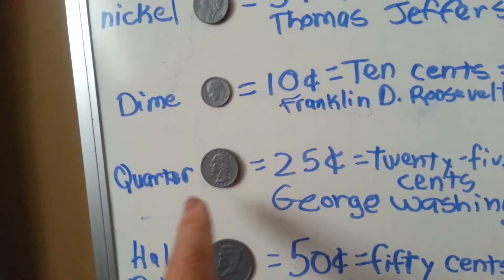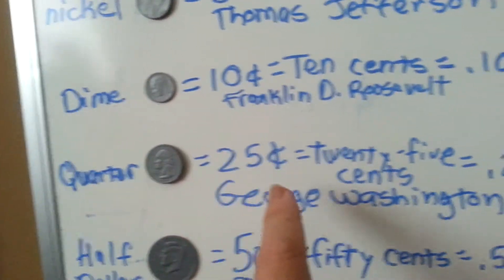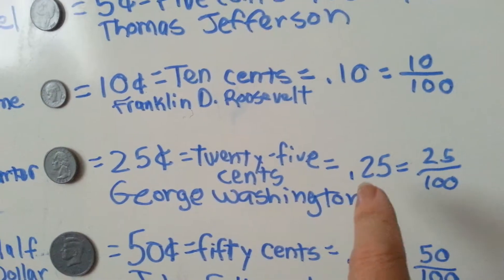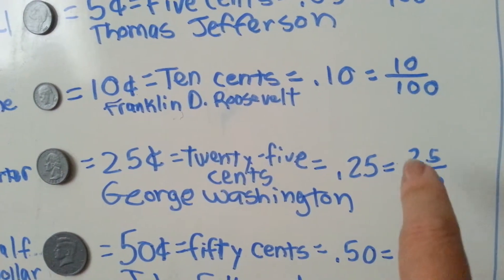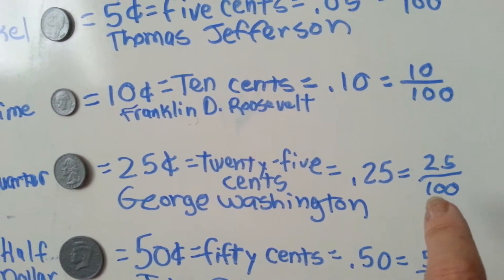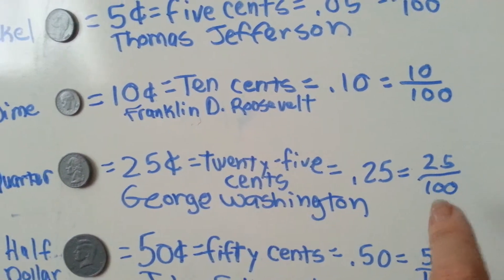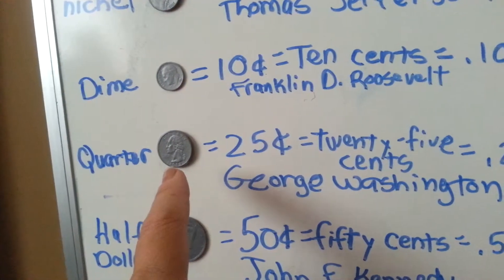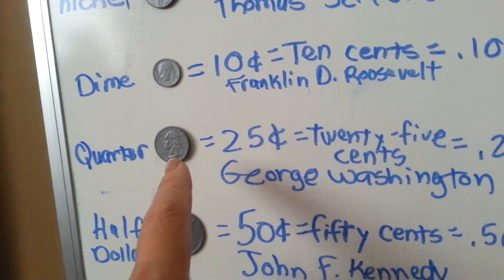This is a quarter, equal to twenty-five cents, .25 or twenty-five one-hundredths, one-fourth of a dollar, and has a picture of George Washington on it.